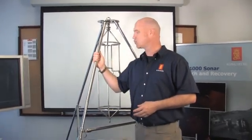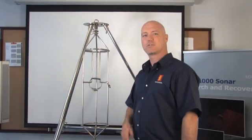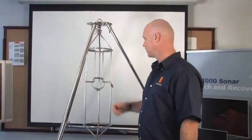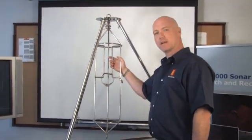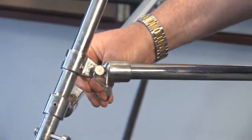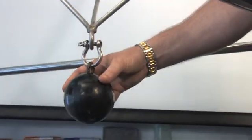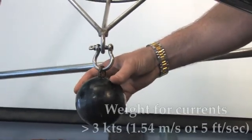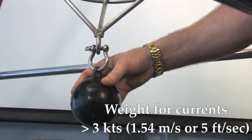The last piece of equipment we're going to discuss is a stainless steel gimbal tripod. The tripod consists of the following parts: the sonar protective cage, quick release pins. A weight can be attached to the bottom of the cage to help with stability in currents greater than 3 knots.